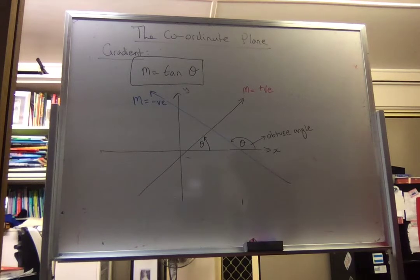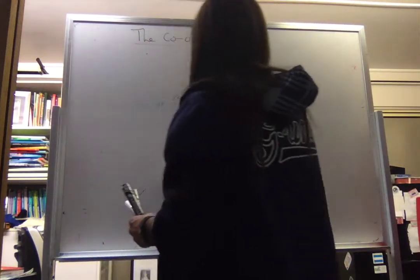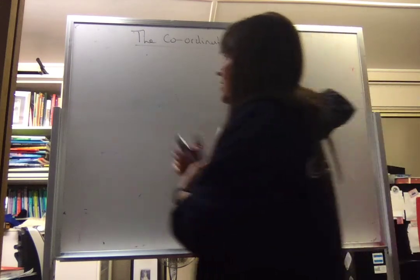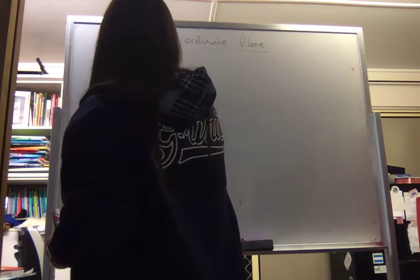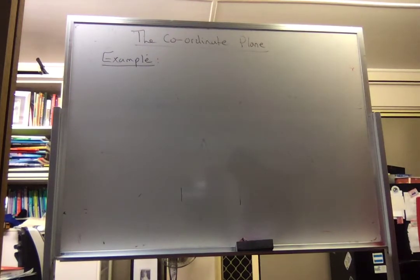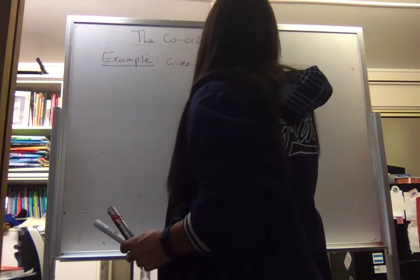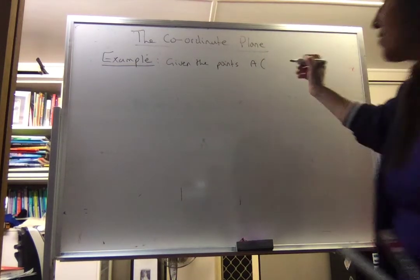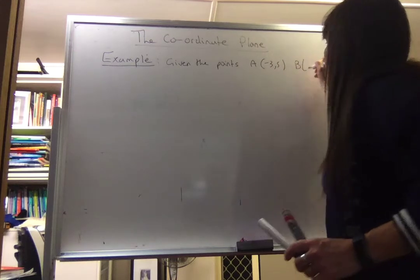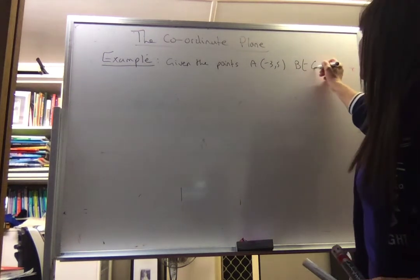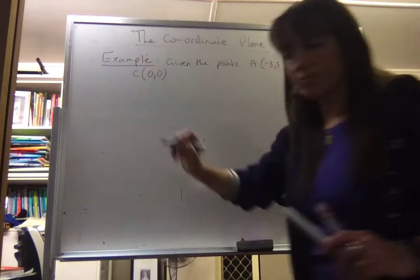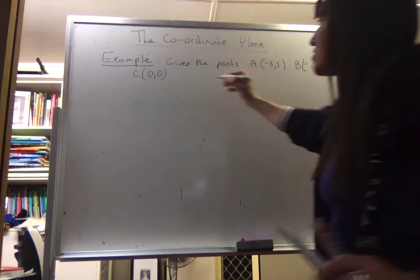Let's have a look at a question. Given the points: A is (negative 3, 5), B is (negative 6, 0), and C is (0, 0) — find the angle of inclination.